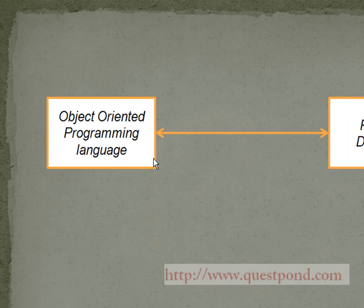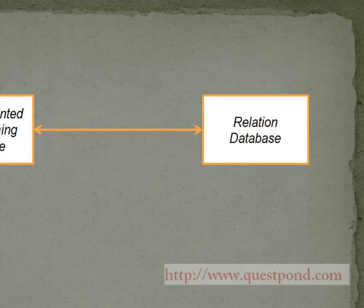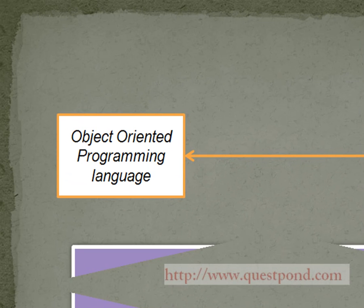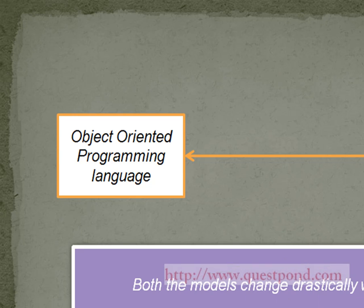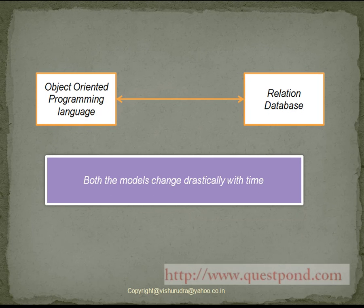Since the advent of object-oriented programming languages, they have been used most for business processing as well as presentation. Even though at the start of development, both the object-oriented programming language and relational database look the same, but as the system evolves, both of them change drastically. Thus, we are left with a problem of mapping between the changes of object-oriented programming language and relational database.